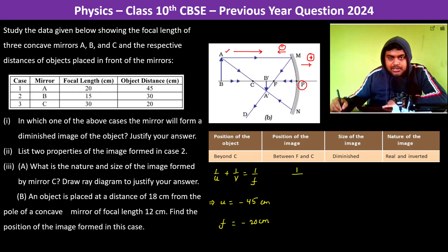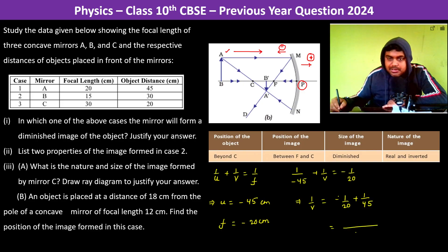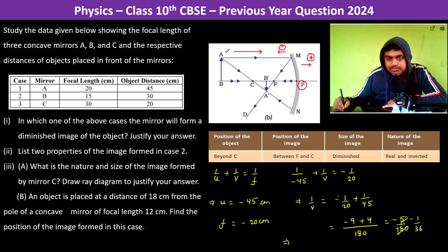Substituting: 1/(-45) + 1/v = -1/20. So 1/v = -1/20 + 1/45. The LCM is 180, giving (-9 + 4)/180 = -5/180. Therefore v = -36 cm.